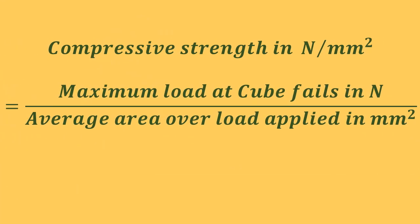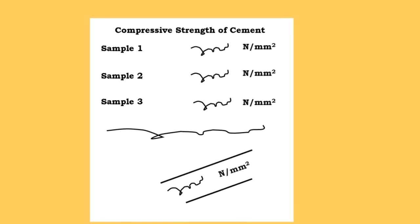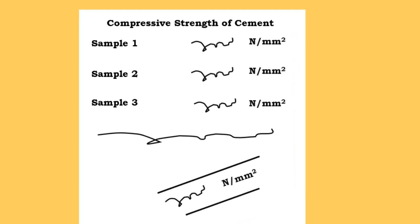The compressive strength is calculated from the crushing load divided by the average area over which the load is applied. The result is expressed in Newtons per square millimeter. Compressive strength is taken to be the average of the results of the three cubes.